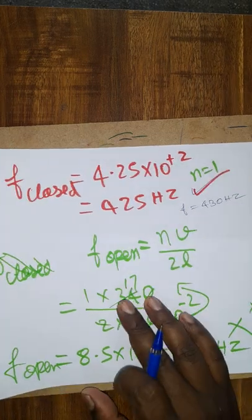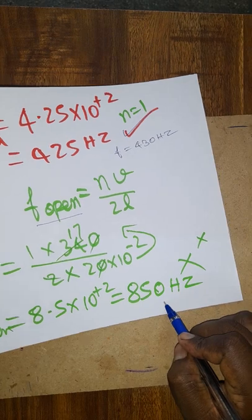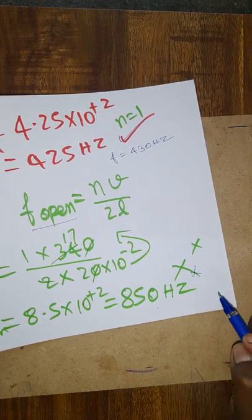That 5 will be error. No need to consider that. In open organ pipe, Nv divided by 2L, so I will get as 850. Definitely in this case I am not going to get the sound.